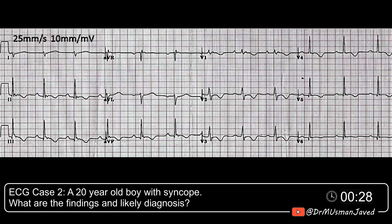This ECG case is of a 20-year-old male being evaluated for syncope. Enumerate the findings in this ECG and the likely diagnosis. Take 10 to 15 seconds to look at it and I will explain the answer.